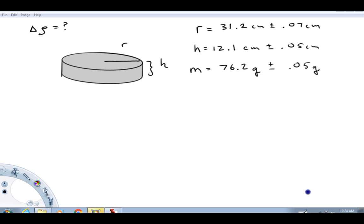So what we're looking at here is this disc-shaped geometry and we're going to imagine that the radius of this disc has been determined to be 31.2 centimeter plus or minus 0.07 centimeters, the height 12.1 centimeters plus or minus 0.05 centimeters, and a mass has been determined to be 76.2 grams plus or minus 0.05 grams.